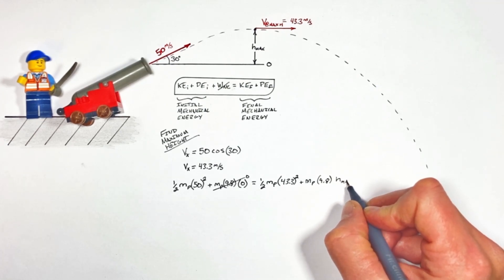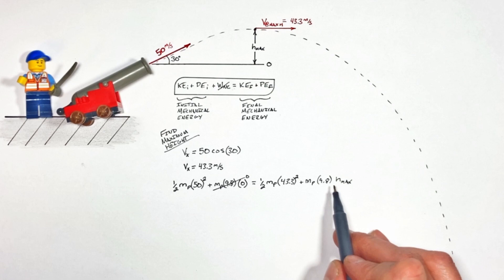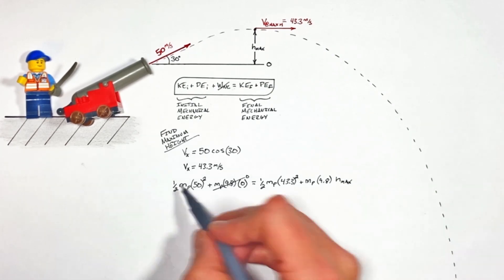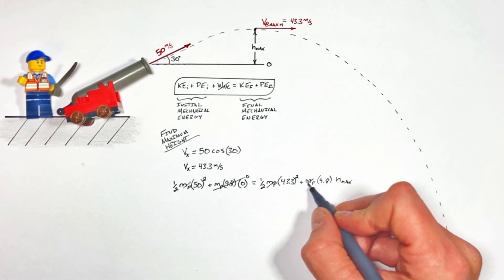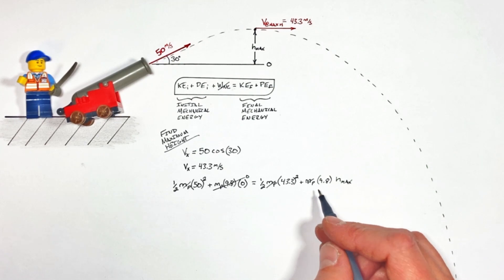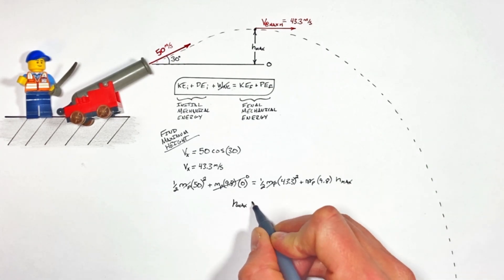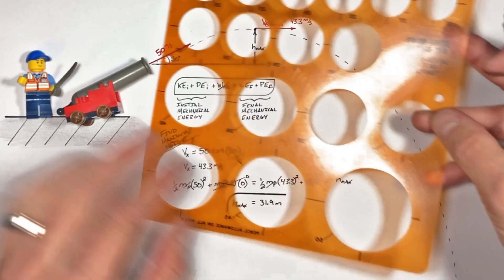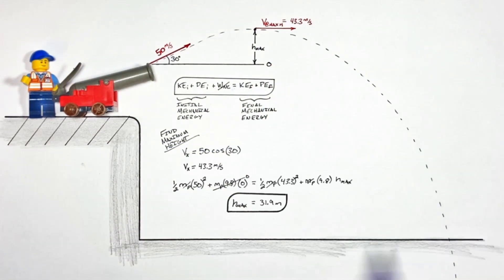The first thing you'll notice is we have a mass of the projectile in every term, so we can actually cancel that out. And we find the projectile goes 31.9 meters above the cannon. The conservation of mechanical energy in projectile motion doesn't just stop at finding the maximum height.